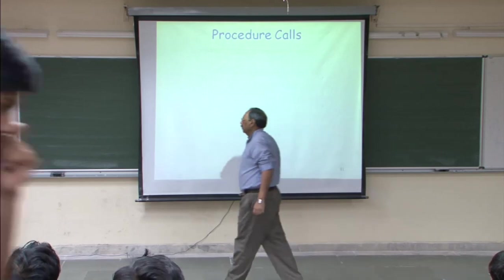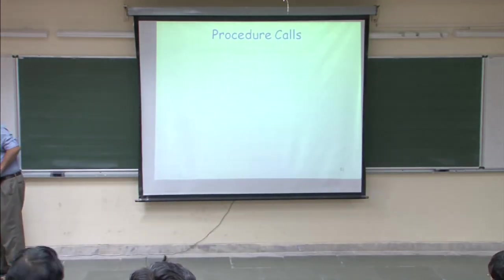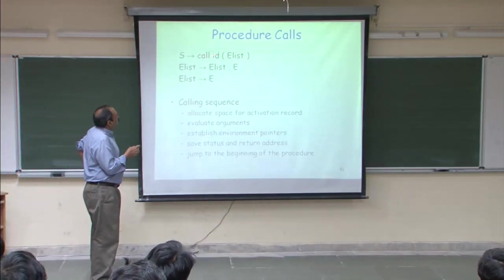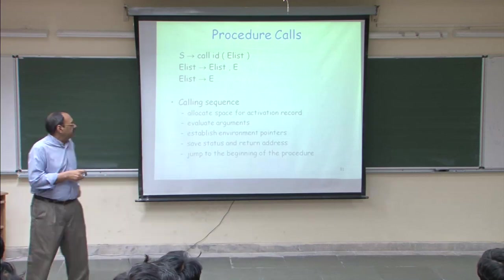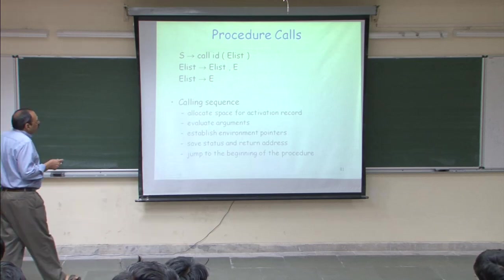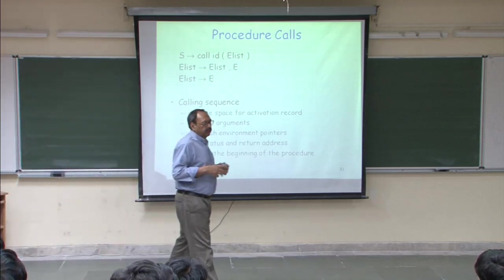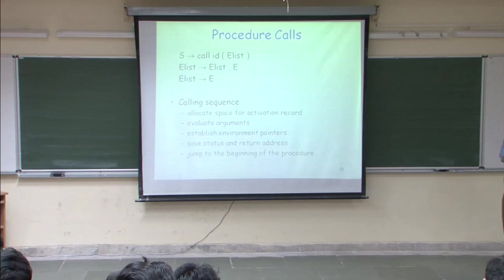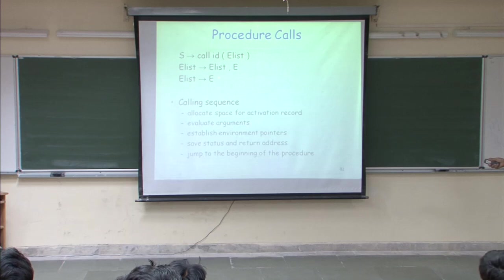When talking about a procedure call, what we have is: if I look at the syntax of the procedure call, there is an identifier associated with the name. At some point I am saying 'call' a procedure with an argument list. The argument list can be recursively defined as a list of arguments where argument list is E_list followed by E. Arguments could be expressions or a single variable depending on the passing mechanisms.